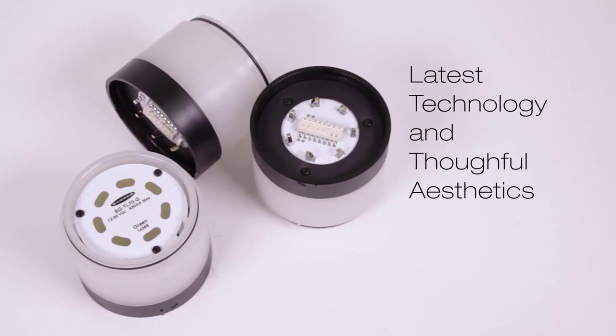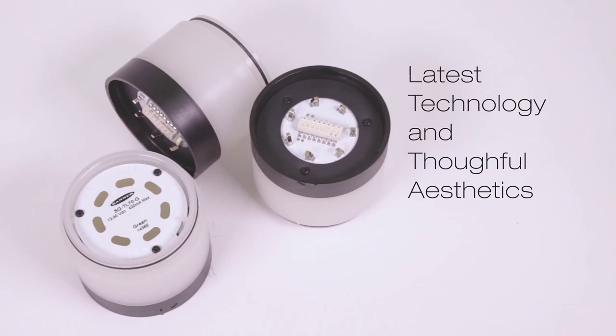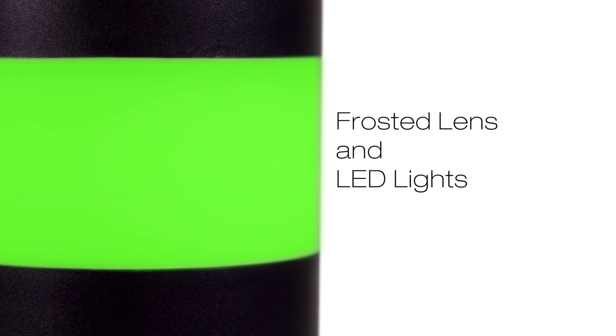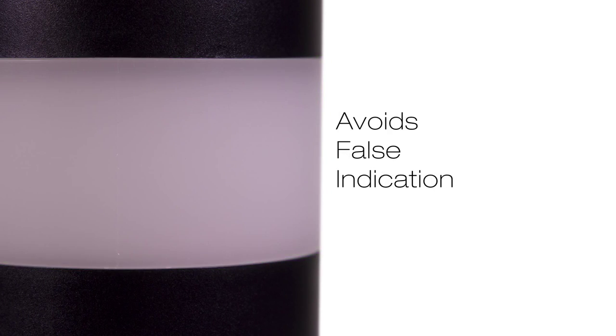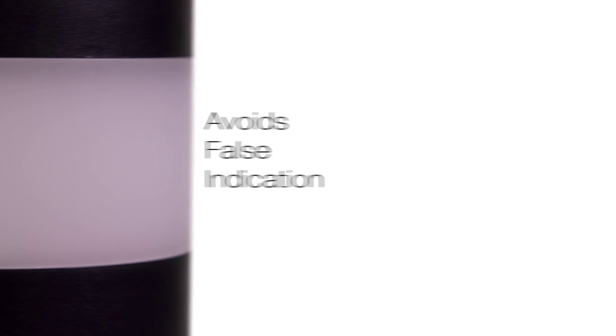Banner engineered a better design using the latest technology and thoughtful aesthetics. Unlike other indicators that use clear or colored lenses and dim bulbs, the TL70 uses a frosted lens and LED lights to deliver better, brighter status indication and a pure gray when off to avoid false indication from ambient light.